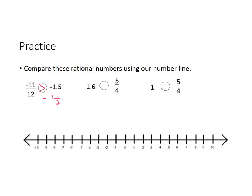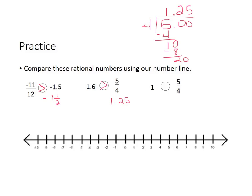Then we have 1 and 6 tenths and 5 fourths. Since 5 and 4 are easily divisible, we'll change them both to decimals. So 5 divided by 4: 4 goes into 10 two times, and 4 goes into 20 five times, giving us 1 and 25 hundredths. So we have 1 and 6 tenths versus 1 and 25 hundredths. They're both positive, so 1 and 6 tenths has greater value because 1 and 25 hundredths is farther to the left. And 5 fourths equals 1 and 25 hundredths, which is greater than 1.